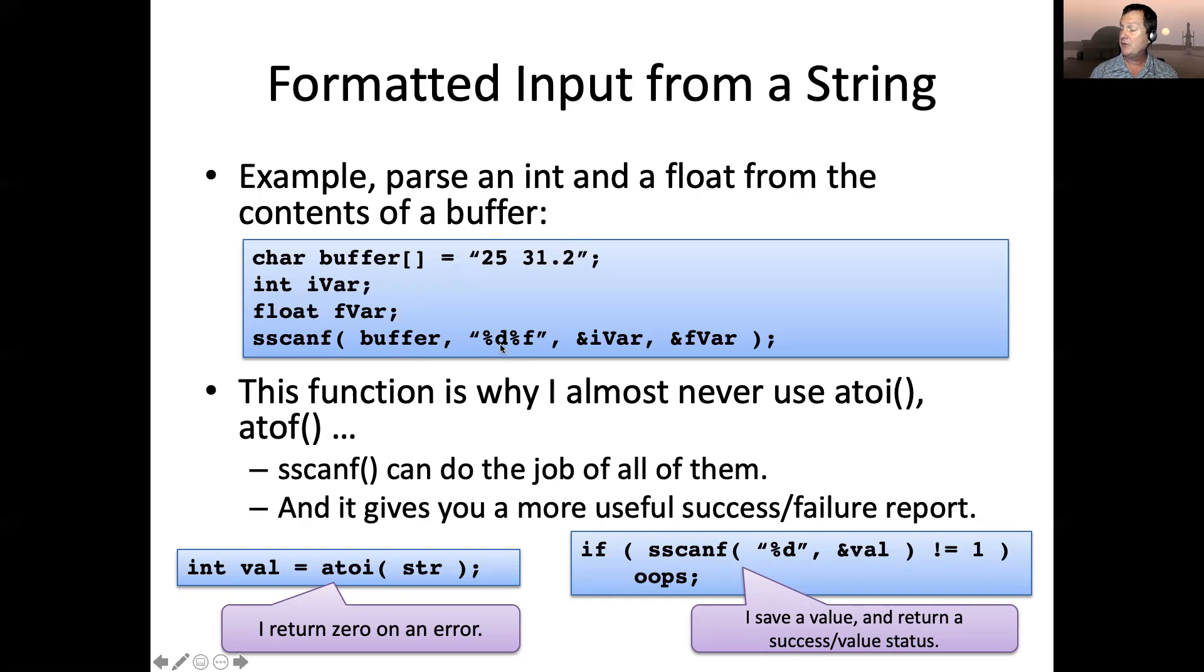So here I'm saying I want to read a decimal integer followed by a float followed by a four byte float on the common platform. And then I pass the address where I wanted to store those things.